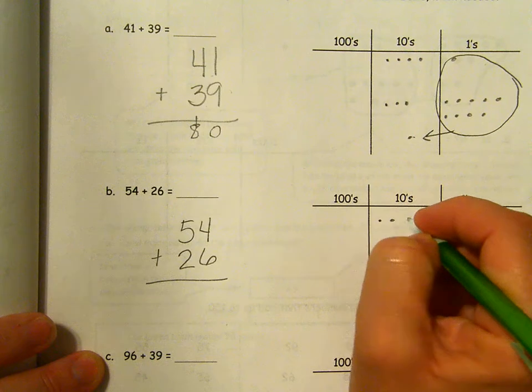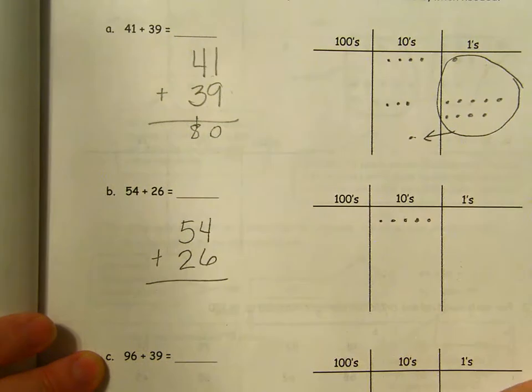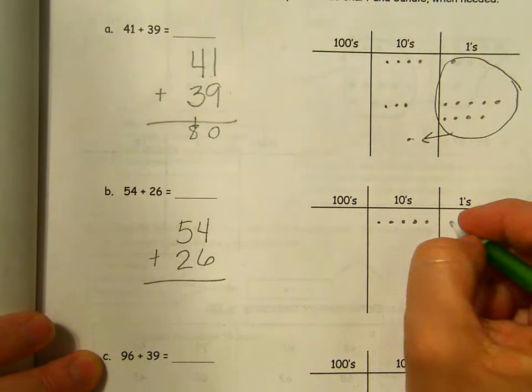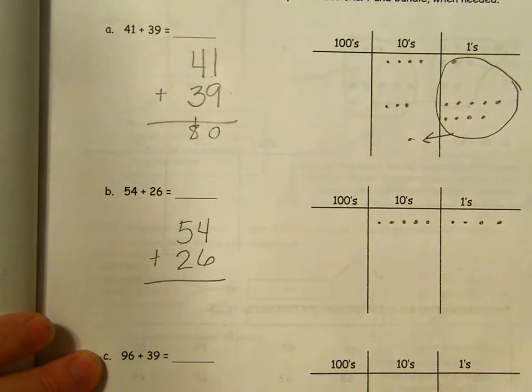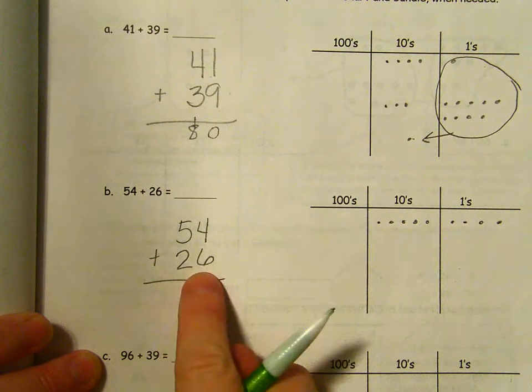So 54, I'm going to model that over here with chips. One, two, three, four, five tens and four ones. 51, 52, 53, 54. Down here I have 26.